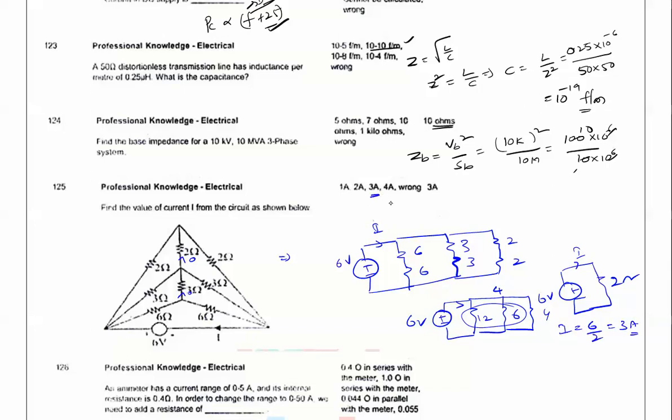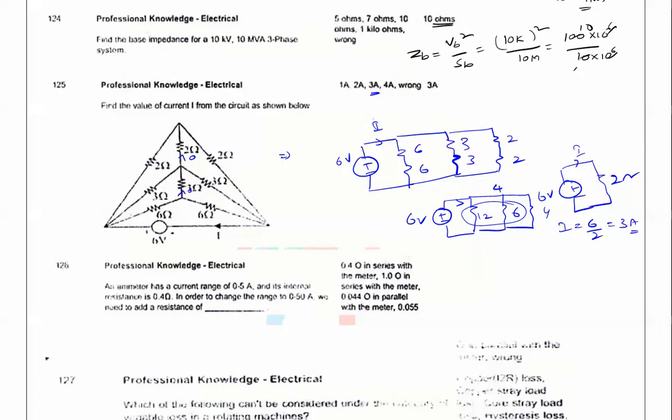Next question: An ammeter has a current of 0 to 5 amps and the internal resistance is 0.4 ohms. Rm is 0.4 and we need to find R shunt. In ammeter, m is maximum reading divided by meter reading. So this is 50 amps, 0 to 5 means 50 amps, and meter reading is 5. How much is it? 10.